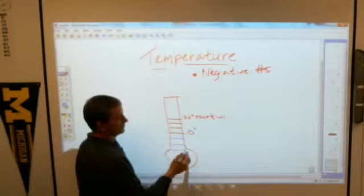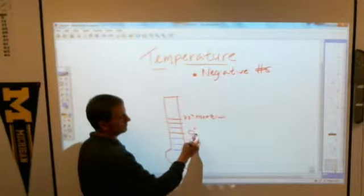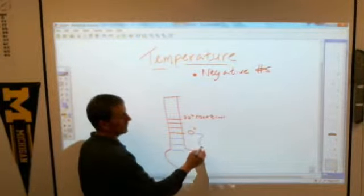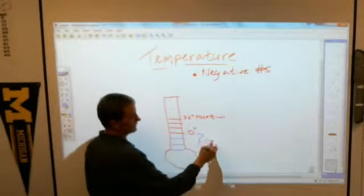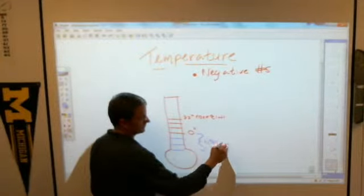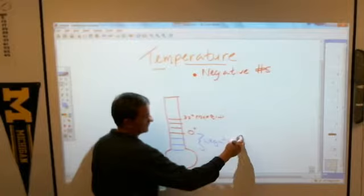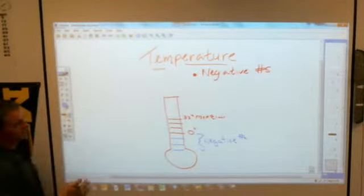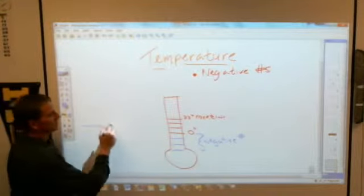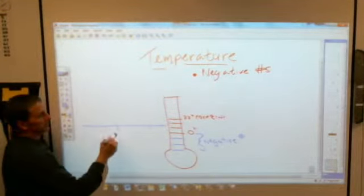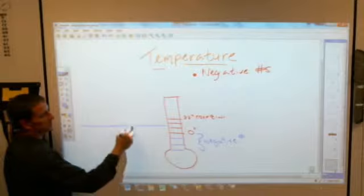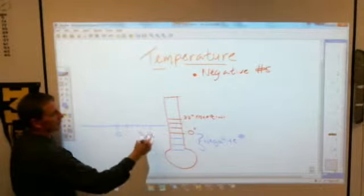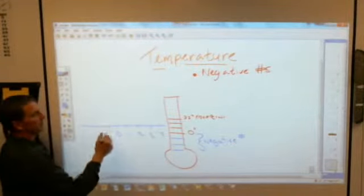Below zero. And these numbers here are negative numbers. And if you think about negative numbers, actually let's kind of take our little thermometer, lay it on its side, put zero here. One, two, three, four.